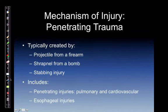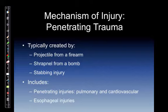Penetrating trauma is typically created by a projectile from a firearm, shrapnel from a bomb, or a stabbing injury. Penetrating injuries of the pulmonary system may damage the trachea or bronchi — tracheal-bronchi disruption — so that no air reaches the alveolar sac. On the cardiovascular side, the normal space between the epicardium and pericardium may become filled with blood or fluid after a penetrating injury, leading to cardiac tamponade. The very fibrous pericardial sac squeezes all four chambers until no cardiac output occurs.